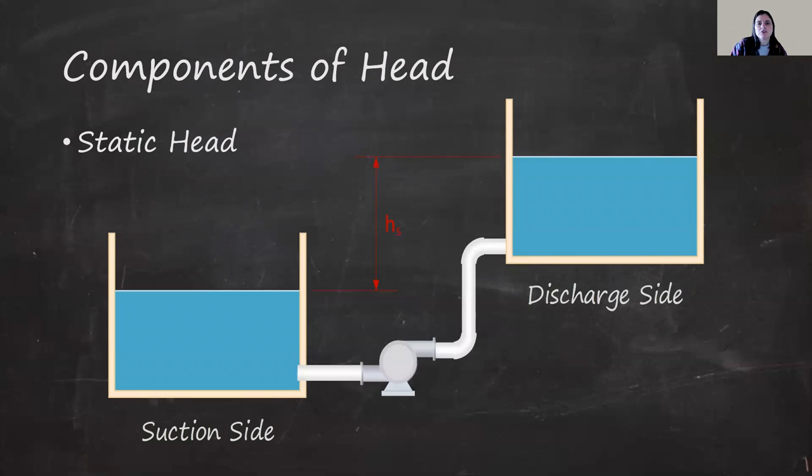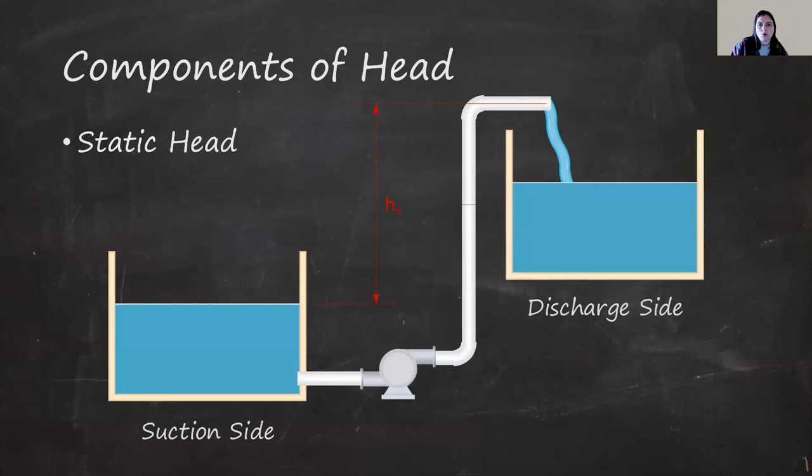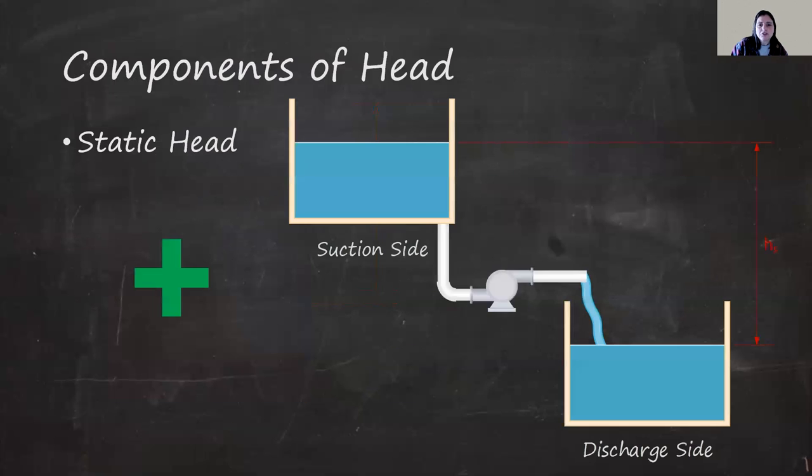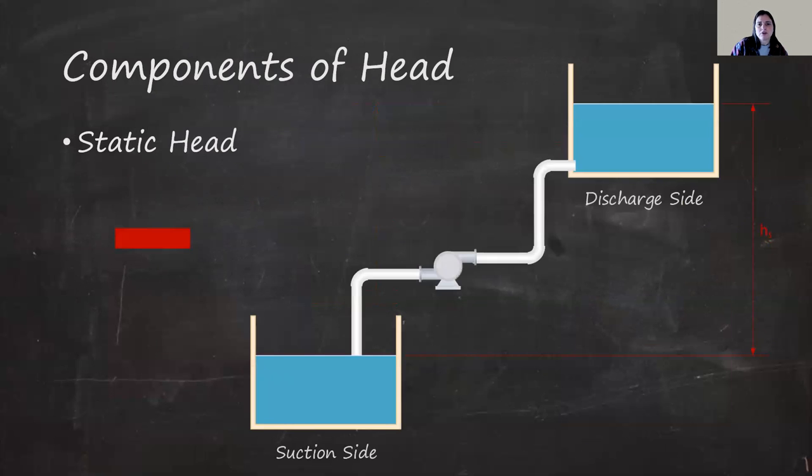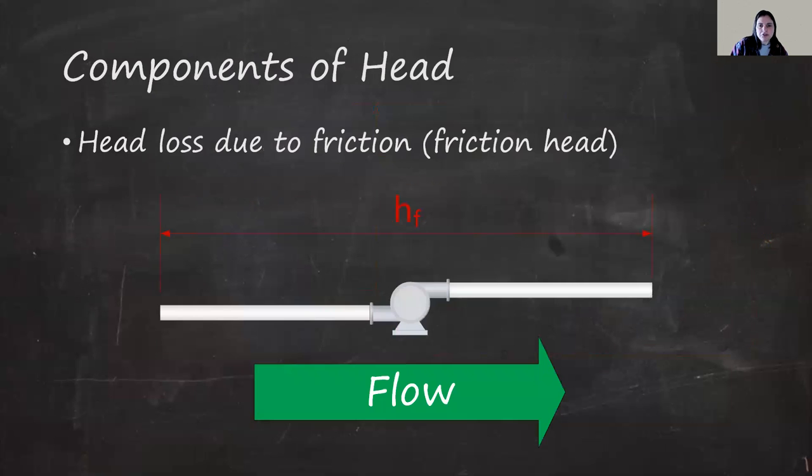Total dynamic head is determined by adding the head from contributing components. Static head is the difference in elevation between the surface of the water on the suction and the discharge side. Or, in the case of free-flowing fluid, the height of the exit. Essentially, static head factors in the weight of fluid and gravity. Water that can move with the help of gravity increases pressure and aids the pump. While moving against gravity works against the pump and requires more energy.